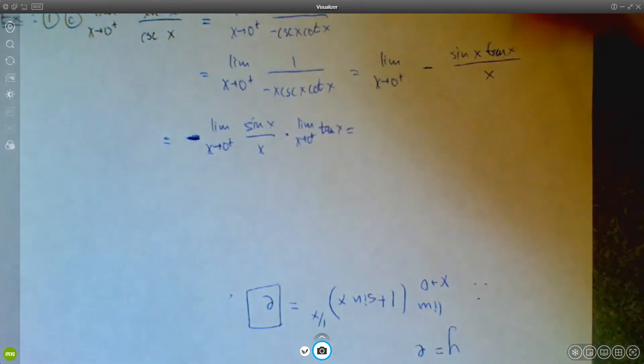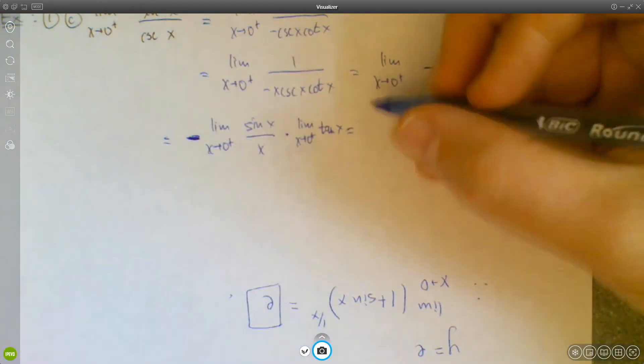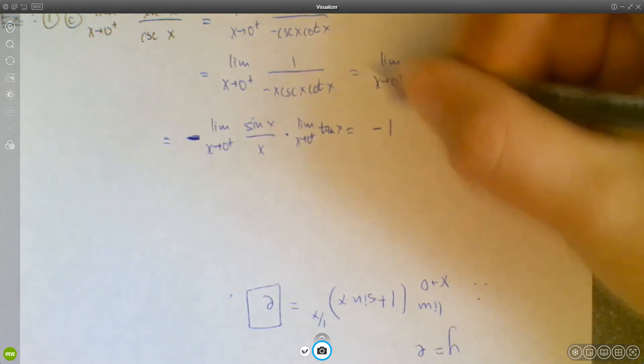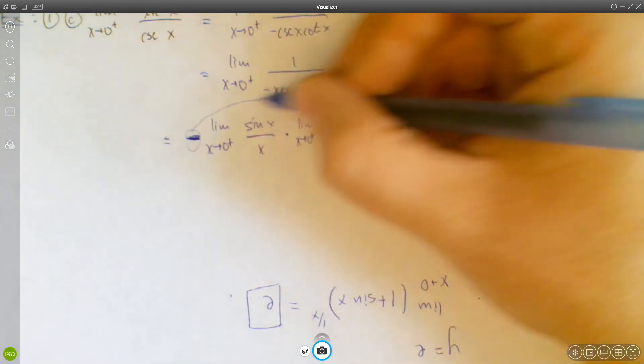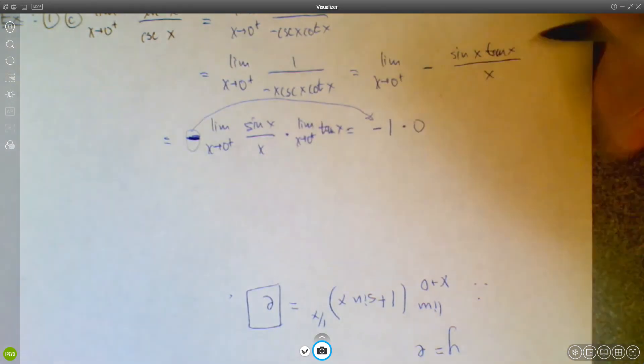And that turns out to be pretty nice, because limit as x approaches 0 of sine x over x, we've talked about earlier on in the semester, that's negative. Well, that's 1, but I'm just bringing this negative along for the ride. So it's negative 1 times limit as x approaches 0 of tangent x is 0.